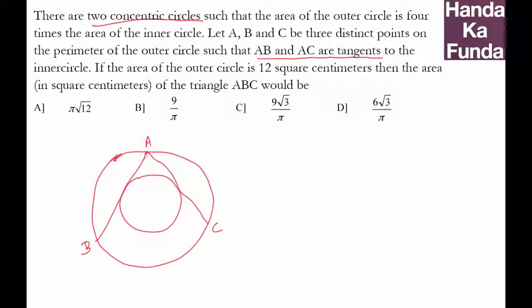First of all, since these are tangents from external points, they will be equal to each other. Not only that, the triangle which will be formed will essentially be an equilateral triangle because the chords are all equal to each other and the circle that is formed will be inside the triangle given.